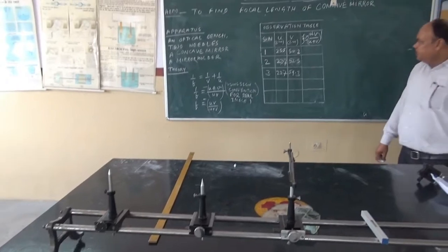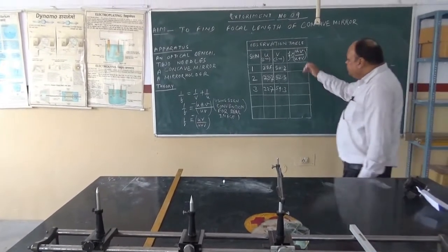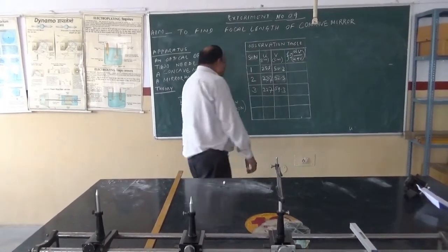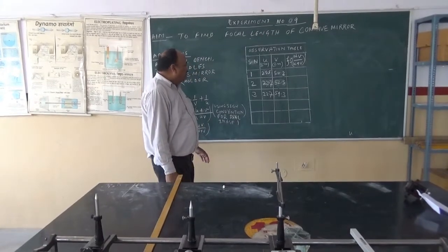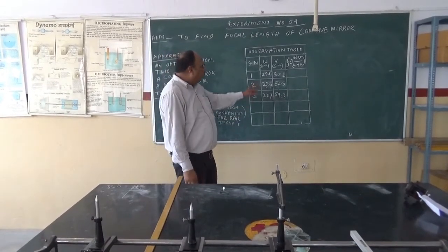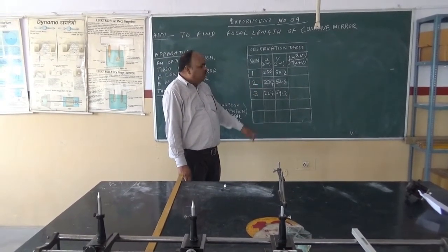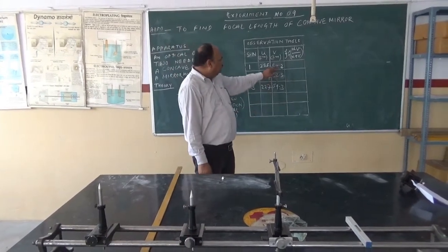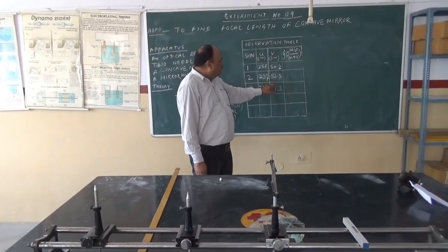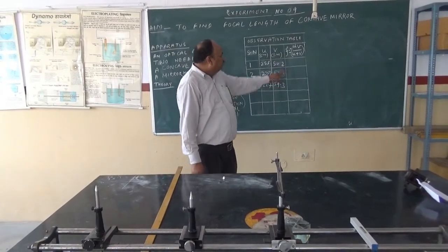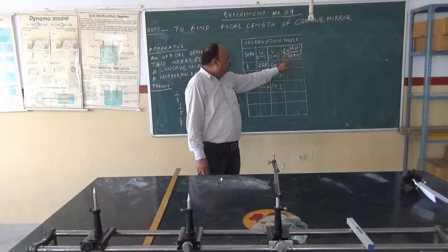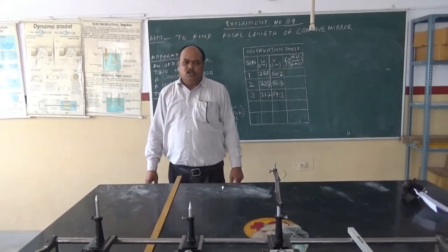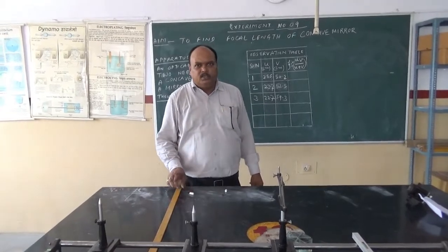In this way, we have to take multiple readings by sliding the object 1 centimeter or 2 centimeter at a time and find out the corresponding value of the image position. After that, we use this formula to get the focal length of the concave mirror. Thank you.